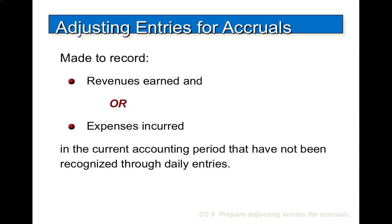The second category of adjusting entries is accruals. Prior to an accrual adjustment, the revenue account and the related asset account, or the expense account and the related liability account, are understated. The adjusting entry for accruals will increase both a balance sheet and an income statement account. These accrual adjusting entries are made to record revenues earned and expenses incurred in the current accounting period that have not been recognized through daily entries.